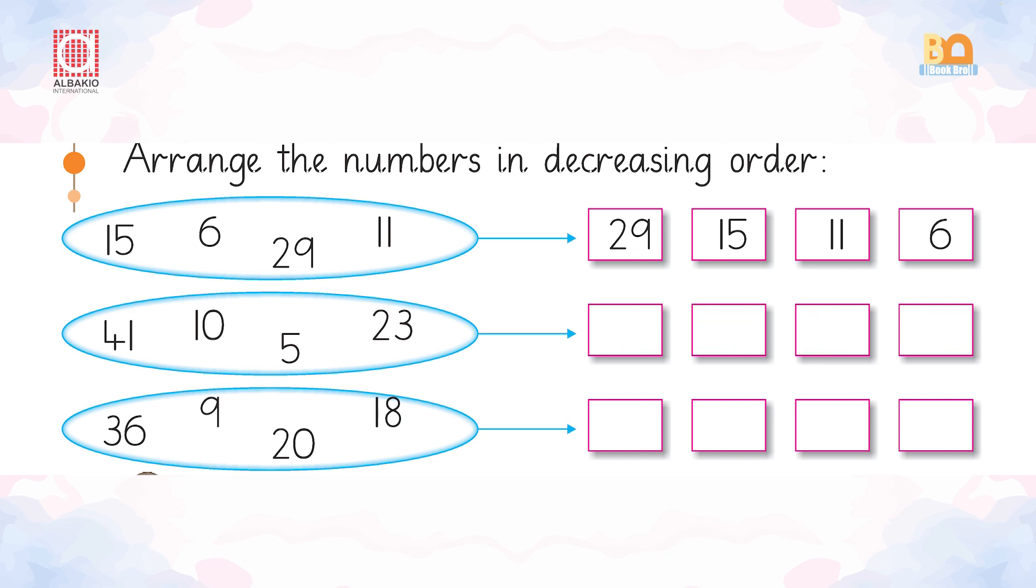Now, look at the third one. 36, 9, 20, 18. We will write 36, 20, 18 and 9.